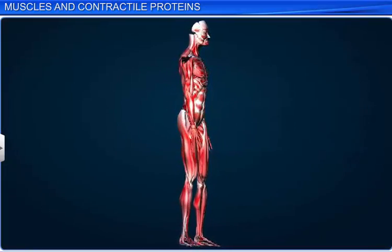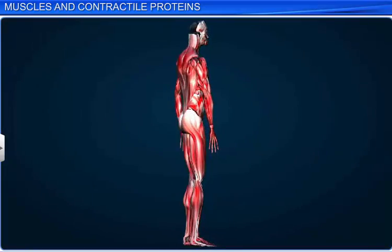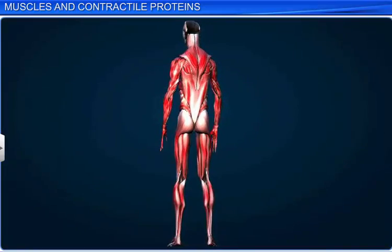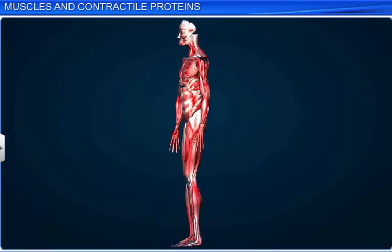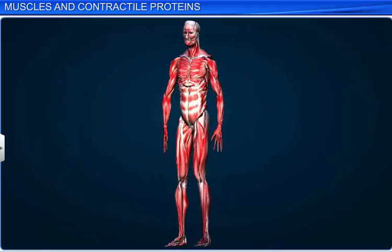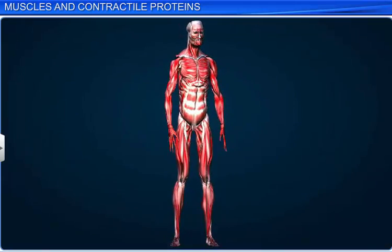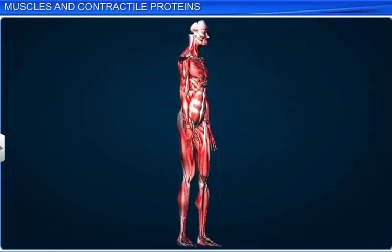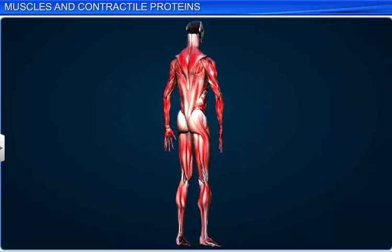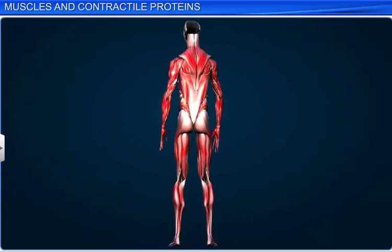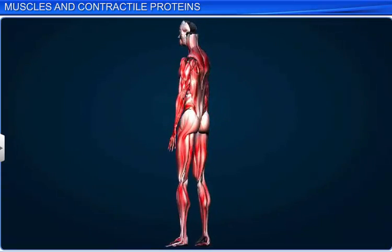Although the human body has about 650 muscles, in every physical action, whether blinking or running, there is an interplay of muscles as well as complex proteins.